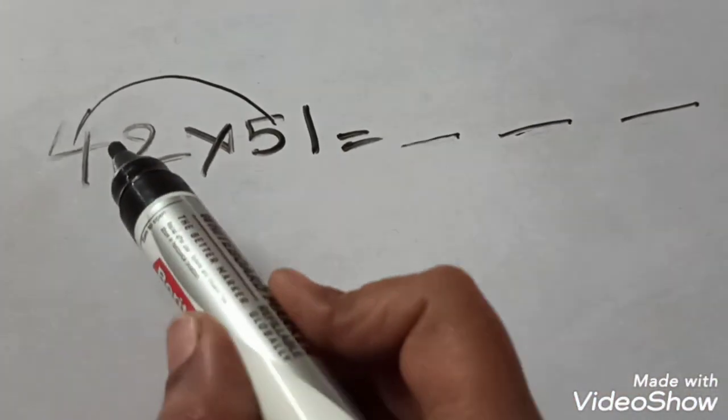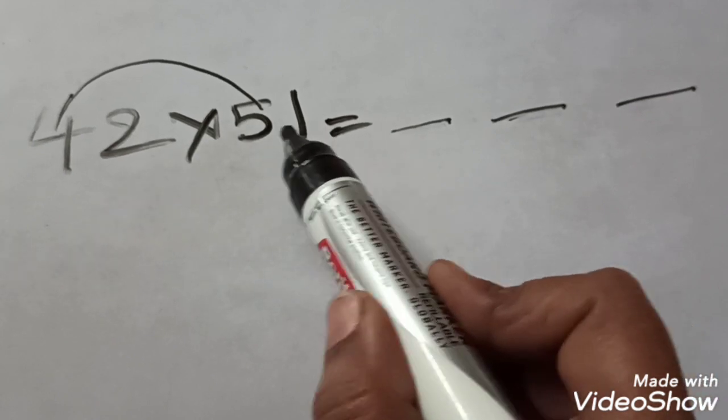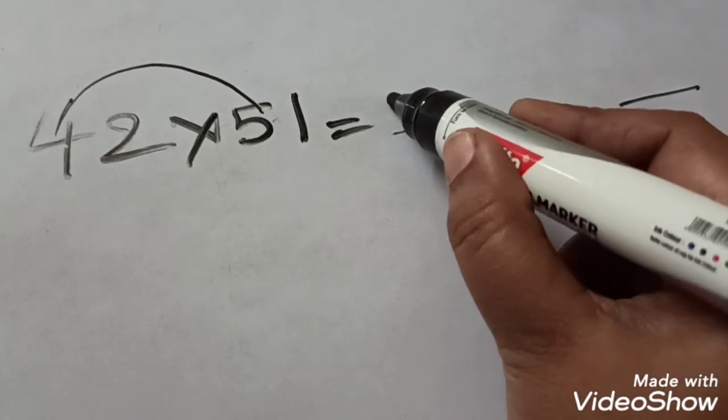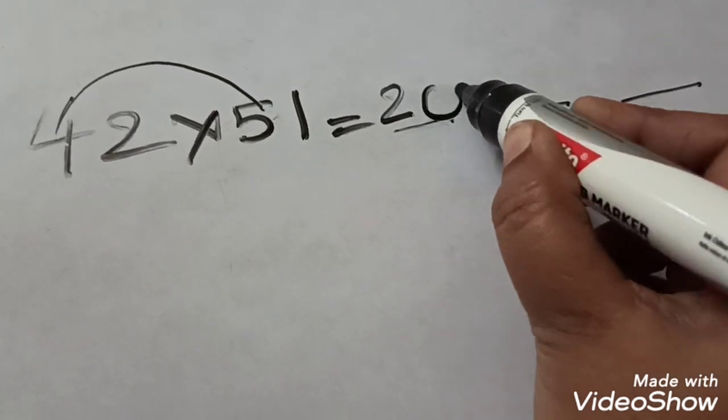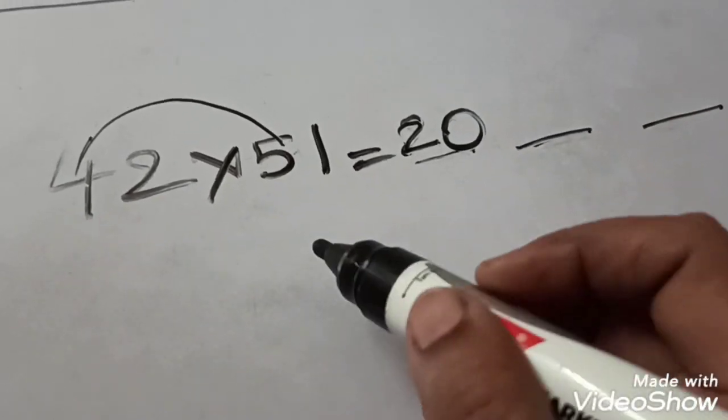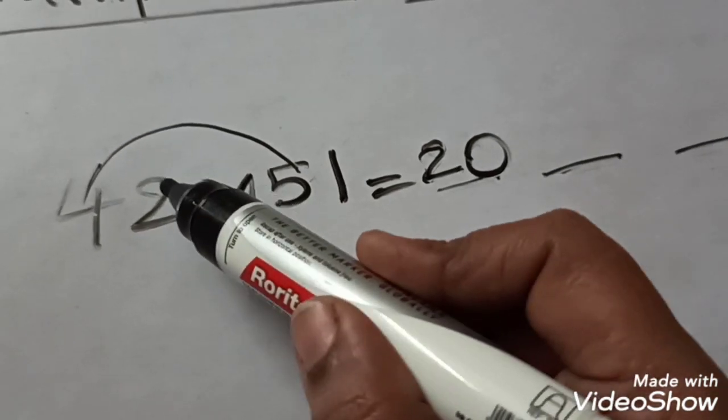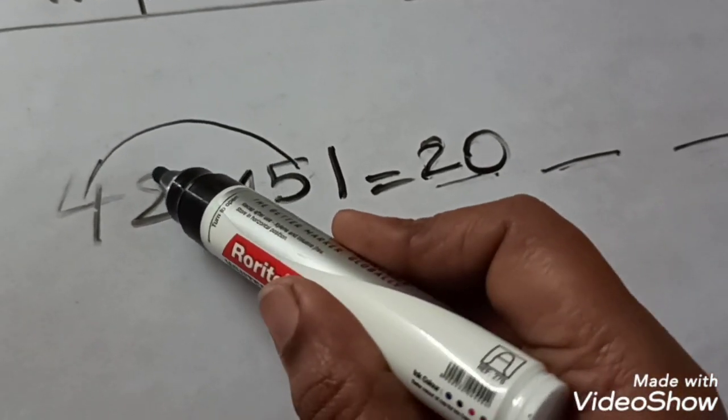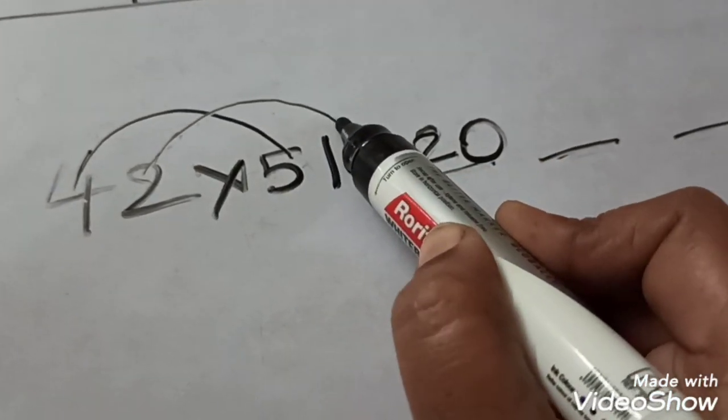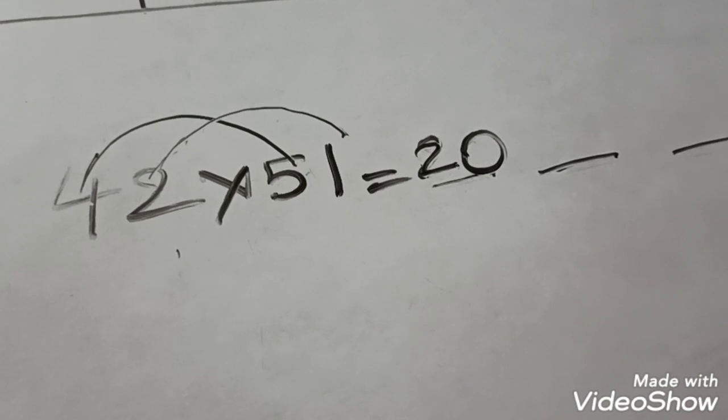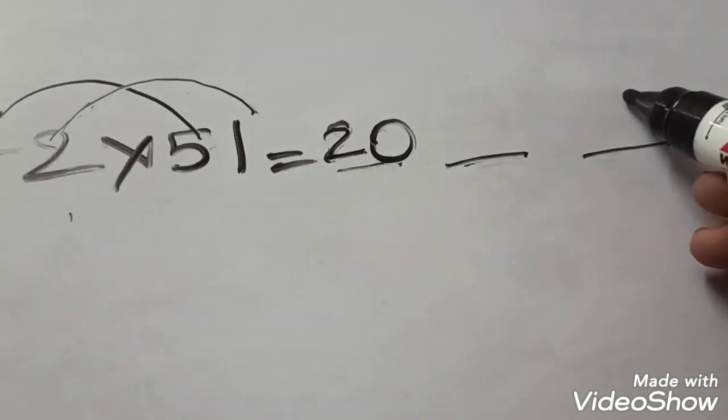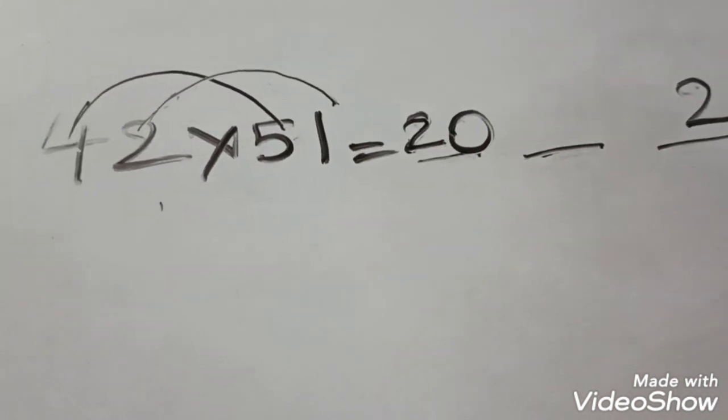First, we multiply the tens place in 42 and tens place in 51. Four fives are 20. We should write 20 in the hundreds place. Next step, we multiply the ones place of 42 and ones place of 51. Two ones are 2. We should write the ones place in the ones place.